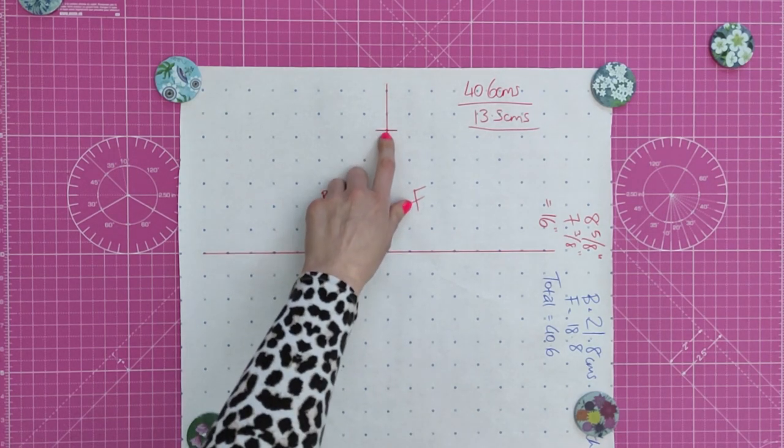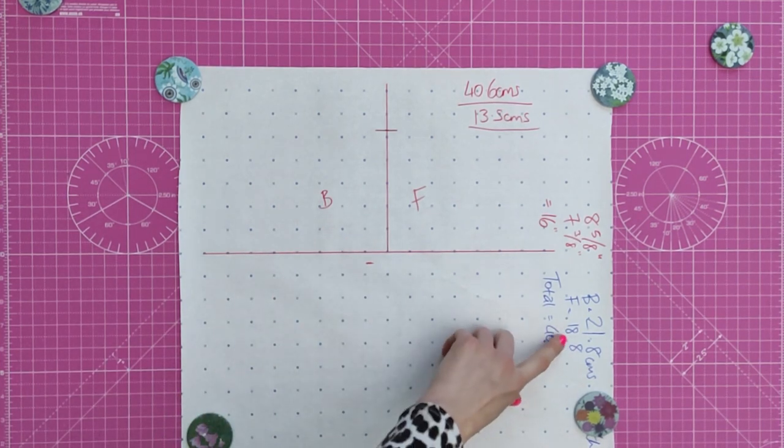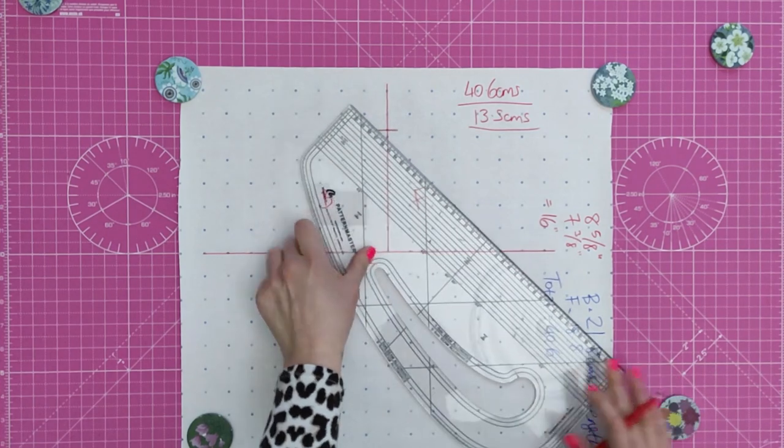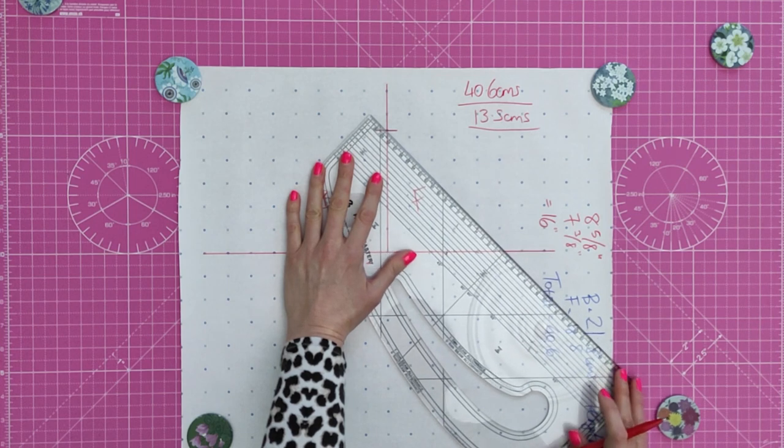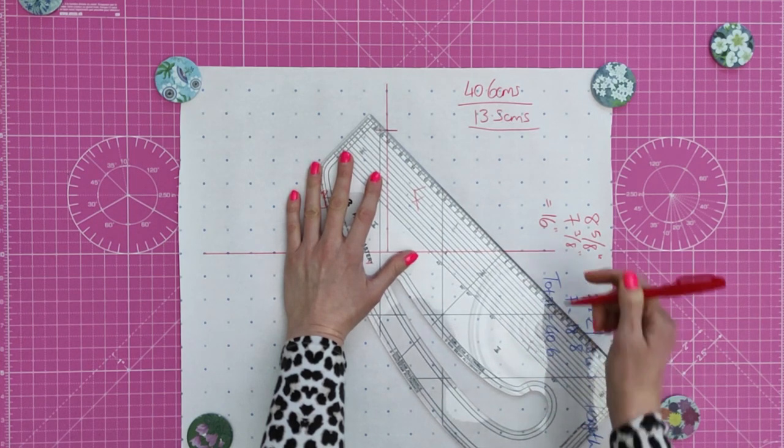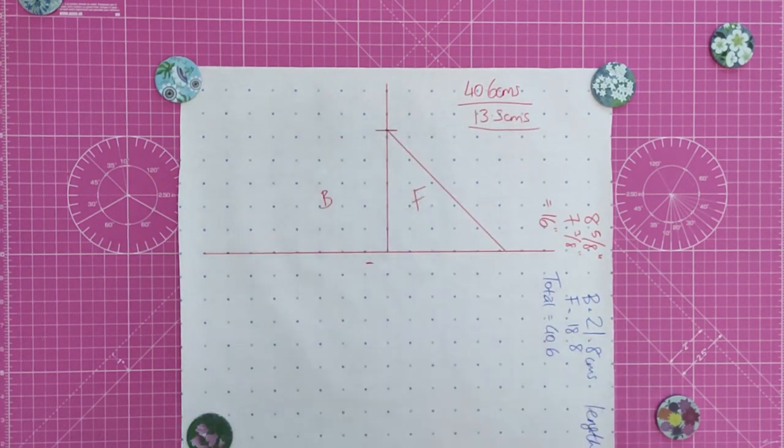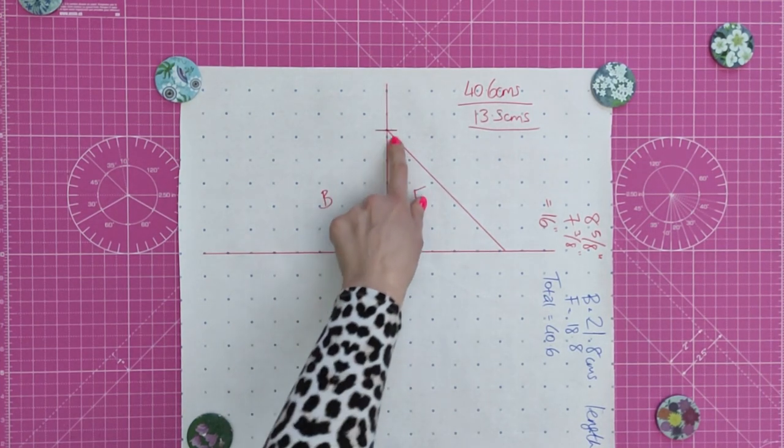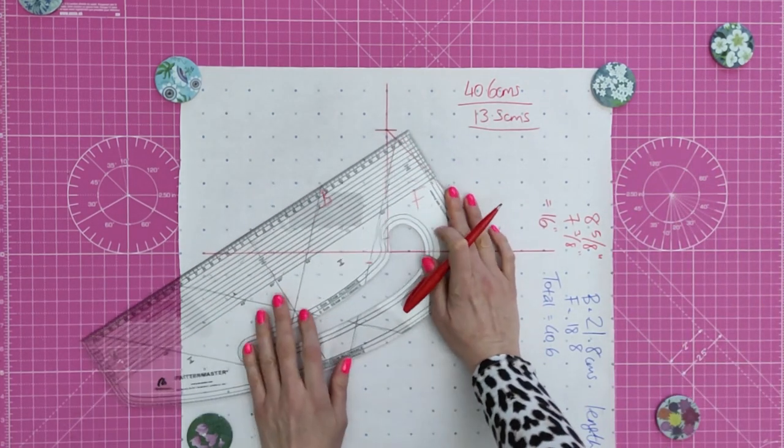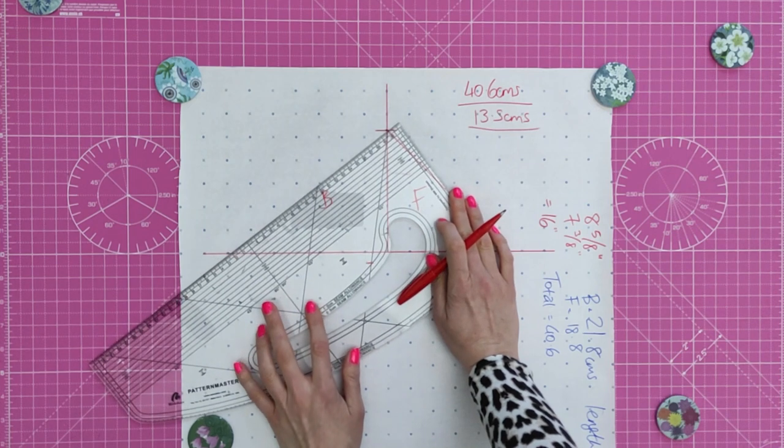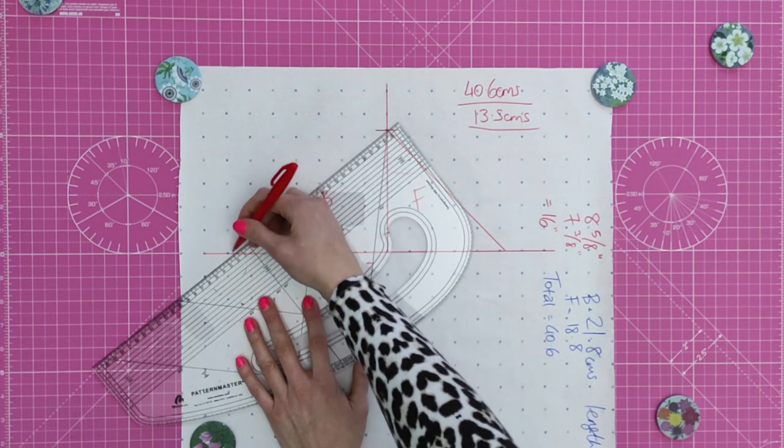Now I want to draw a line from this point down to this line that is the same as my front armhole. My front armhole is 18.8 centimeters. I'm going to find 18.8 here, and then rotate the pattern master so that I get it at zero, and it matches that line. Draw that in. I'm going to repeat the same thing with the back armhole measurement here, just as a straight line. 21.8 centimeters. This only goes up to 20. So, I'm going to do 1.8 the other end, and then draw that straight line in.